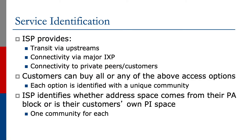So for service identification, what the ISP is going to provide is transit via upstreams, connectivity to major IXPs, and connectivity to private peers or to customers. The customer can choose to buy all or any of the above access options, and each option would be identified with a unique community.